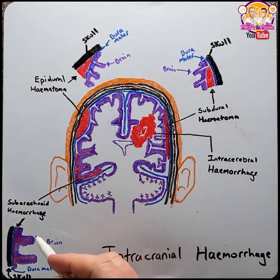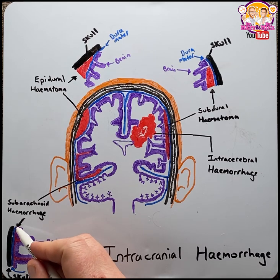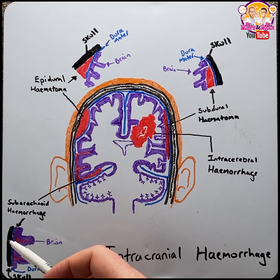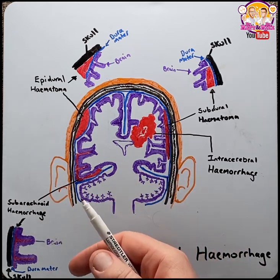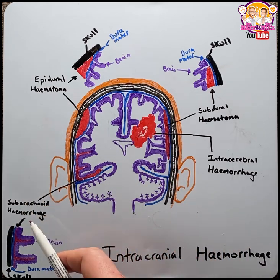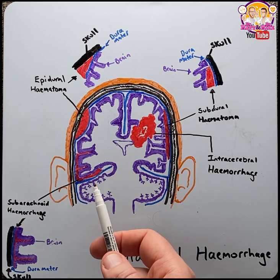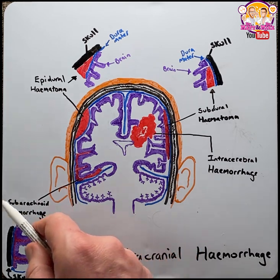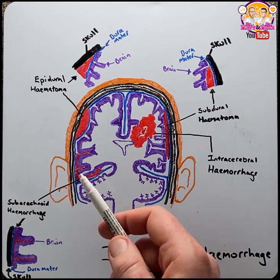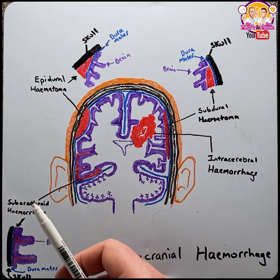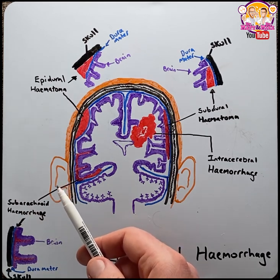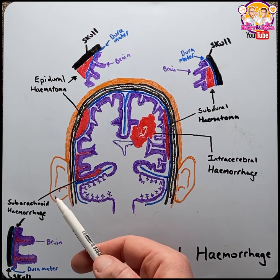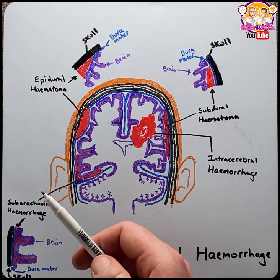Moving on to subarachnoid hemorrhage, this is where we have bleeding into the subarachnoid space — between the pia and the arachnoid layer. This particular bleed type accounts for 5% of all strokes, and can be both traumatic and non-traumatic in origin. The most common cause, about 85% of all subarachnoid hemorrhages, is due to a rupture of an aneurysm. They most commonly present with a thunderclap headache — the worst headache you've ever experienced — followed by neck stiffness and acute confusion.